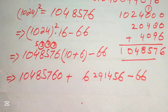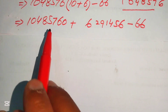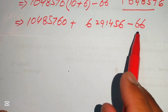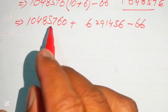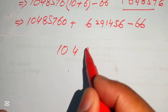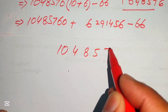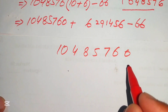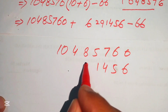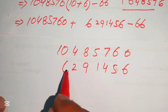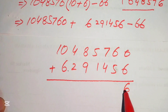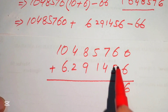In the next step we add the two partial products and then subtract 66. We add 10,485,760 and 6,291,456. Starting from the right: 0 plus 6 is 6; 6 plus 5 is 11 — write 1 carry 1.